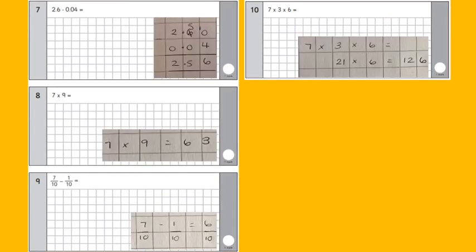Again, decimal points in the same place and I have popped a zero after the six as a placeholder so that I knew that there was no value there, which was important because I've actually had to exchange from the next value across.